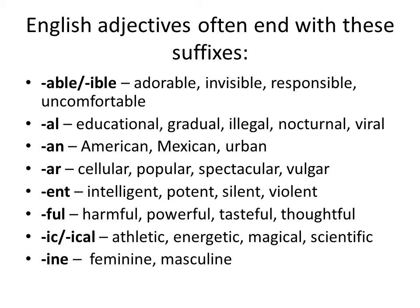The reason we discuss prefixes and suffixes in the context of adjectives is that certain suffixes assist us to form adjectives. For example, the suffix '-able' is used in words like adorable, invisible, responsible, and uncomfortable. The suffix '-ar' appears in popular, vulgar, and similar words. Other suffixes include '-ful' as in harmful, powerful, tasteful, thoughtful; '-ic' as in energetic, magical, scientific; '-al' as in gradual and educational; and '-an' as in American and urban.